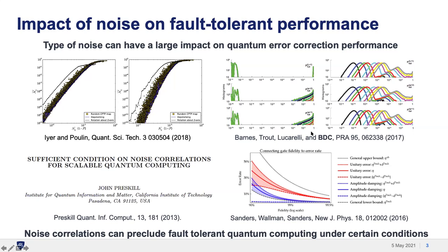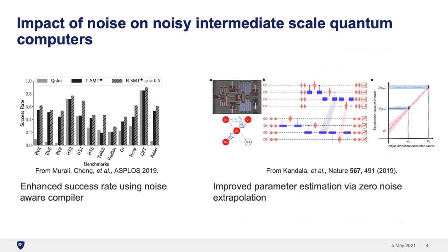Work by Iyer and Poulin showed that for a given gate fidelity — the x-axis — you can get many orders of magnitude spread in the output logical fidelity, depending on the type of noise. Similar results appeared in a paper showing distributions of output logical error rates: the exact same gate fidelity with different noise models yields very drastically different looking distributions.